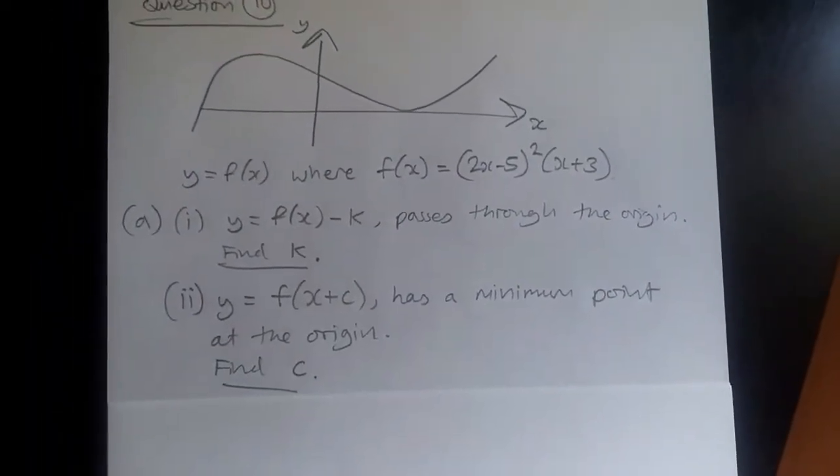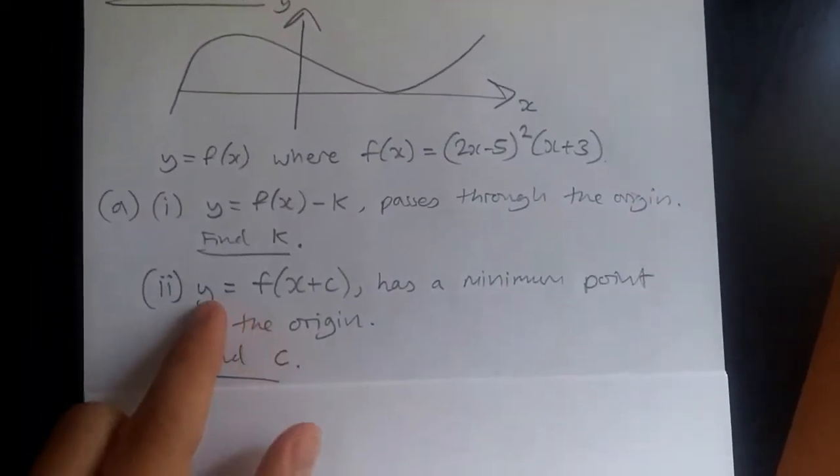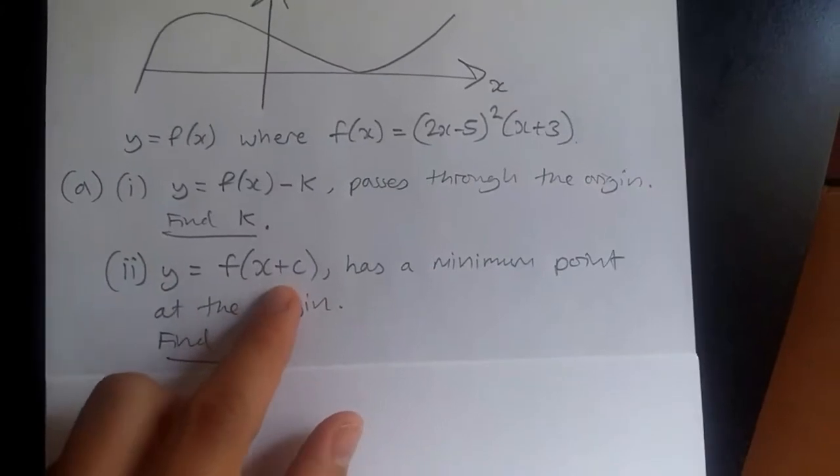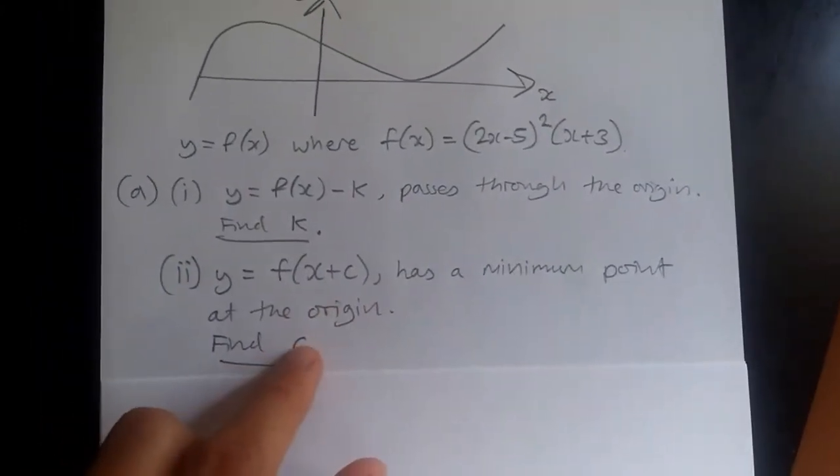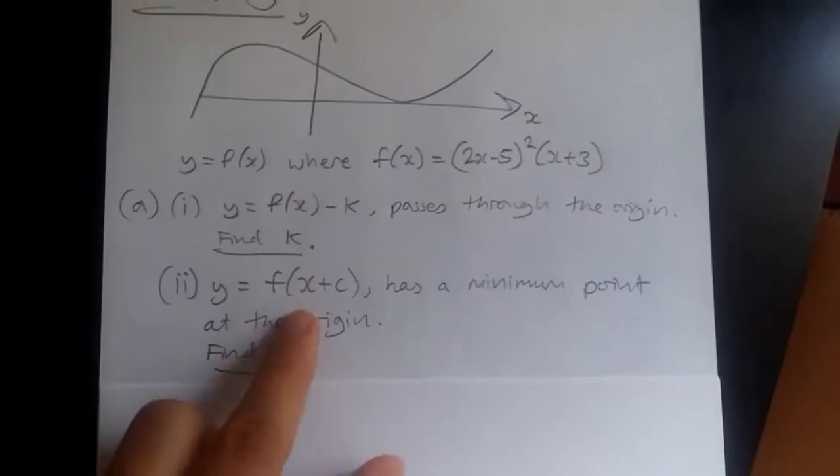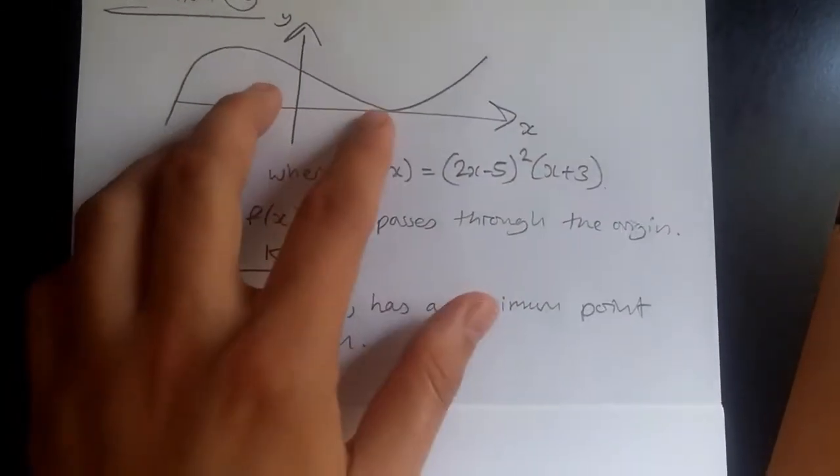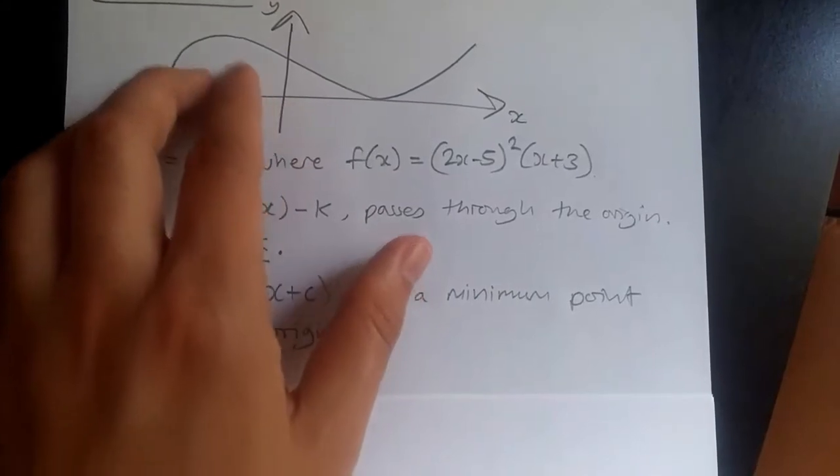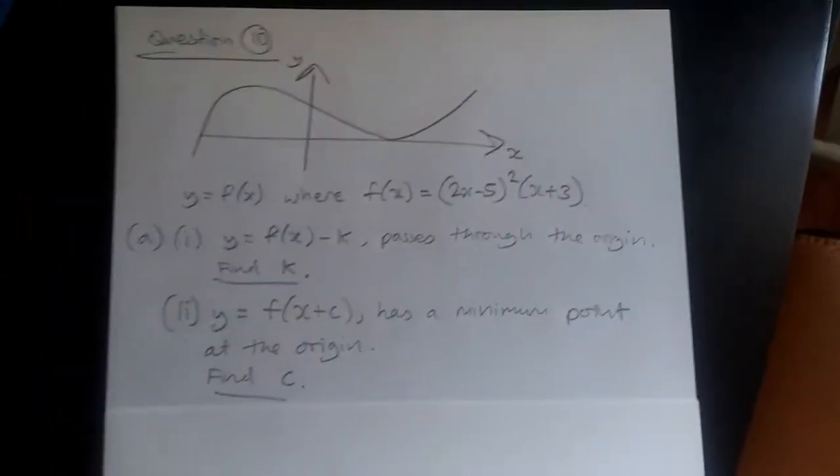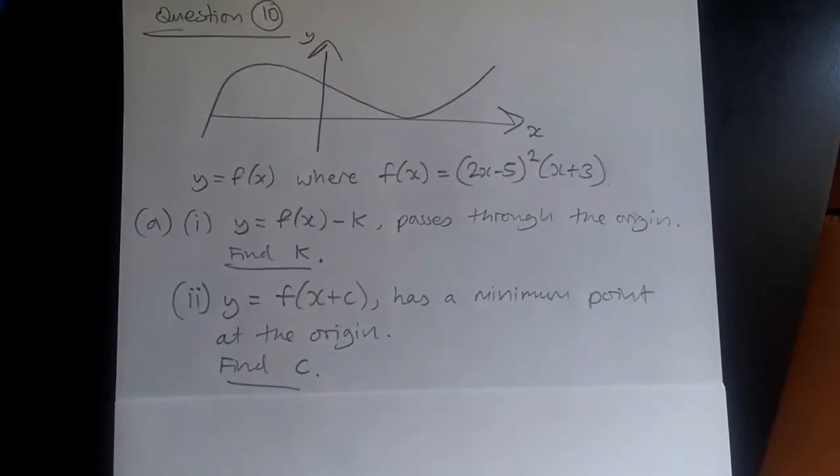So here we have to find k. We're also given another curve, y equals f(x+c), and it has a minimum point at the origin. So we know we have to shift this to the left, and then we find out that the turning point is over there. So again, this will cut through, in some cases, the origin too.